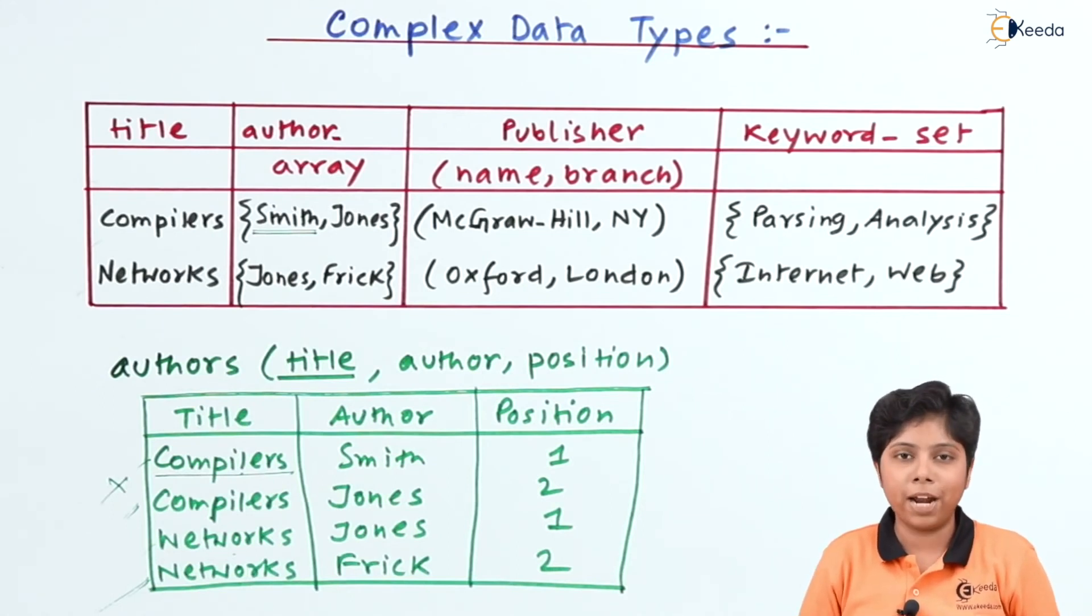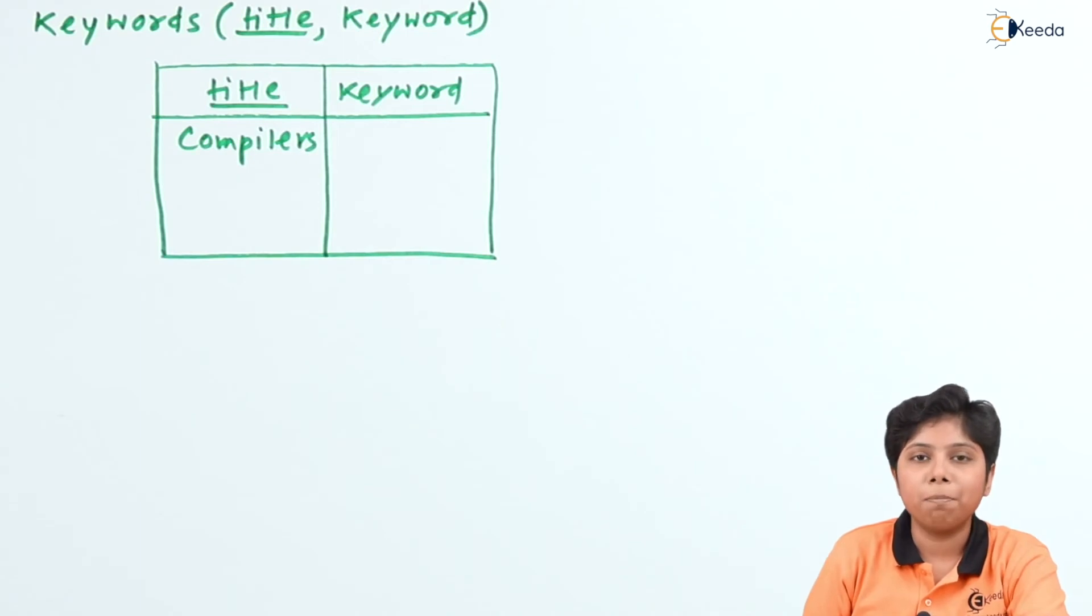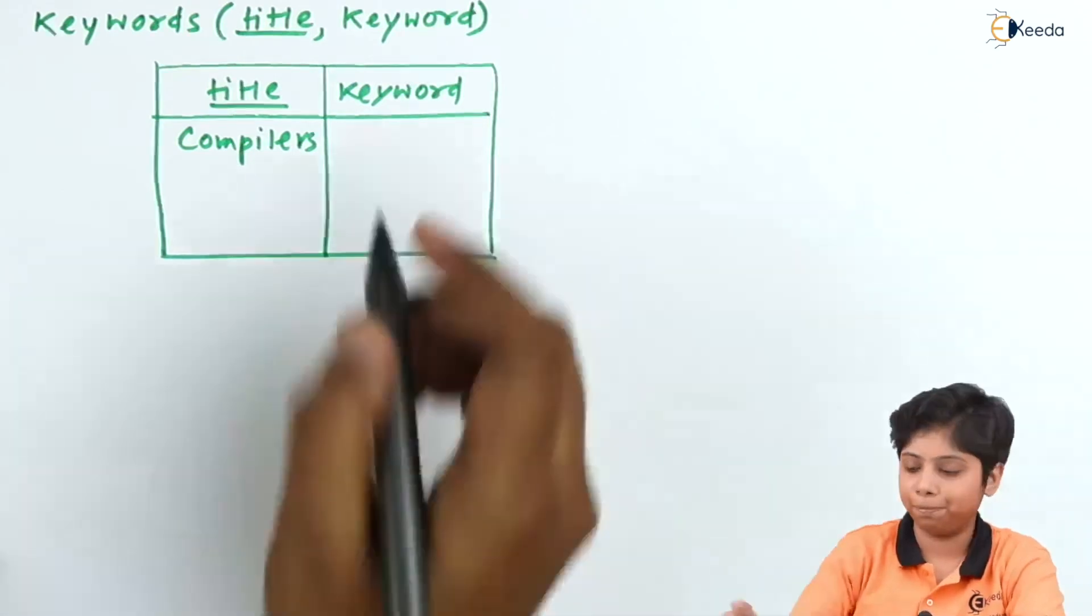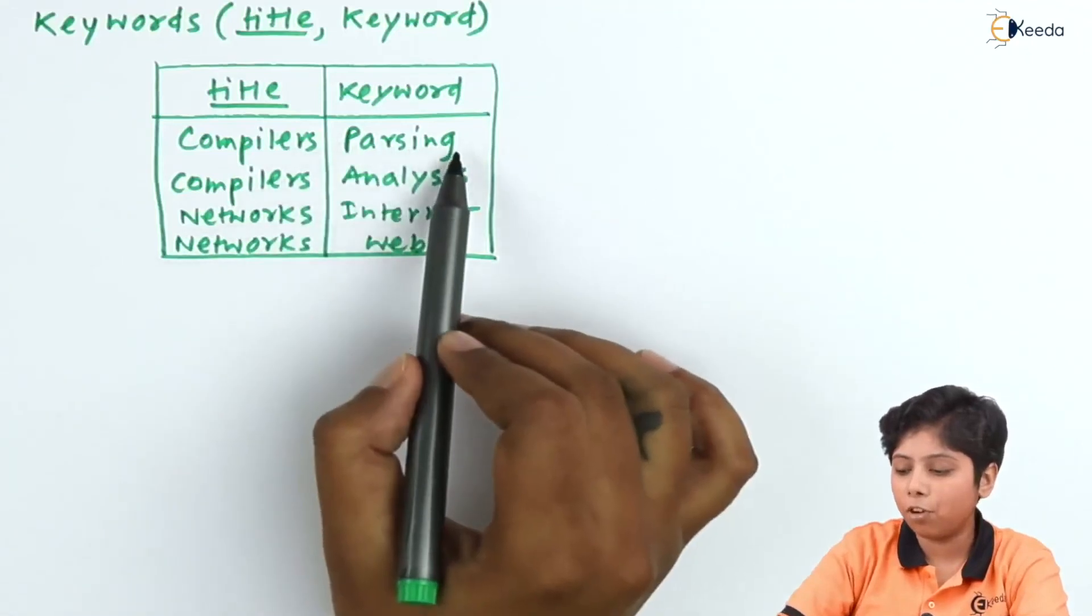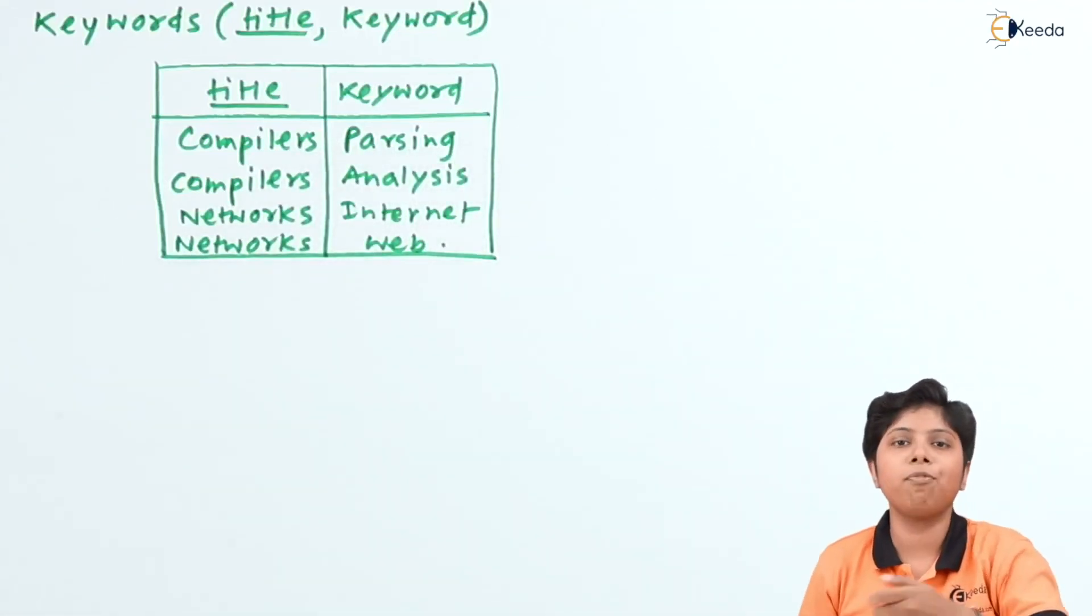The next relation we can derive is keywords. So for compilers we have keywords parsing and analysis. That will be a separate entry to that particular relation compilers. The keywords are the words that we can check for a book to look for another book. So if I want to fetch another book on the keywords parsing and analysis, we can do it by use of the keywords.